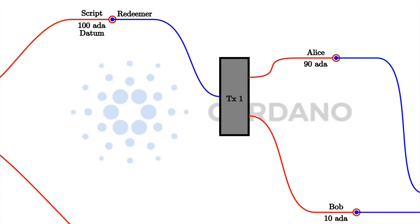Finally, we have the context. There are various choices for what this context could be — very restricted, just the redeemer, or very global, the whole state of the blockchain. In Cardano, it is the transaction being validated, including all its inputs and outputs. So a Plutus script gets three pieces of data: the datum sitting at the UTxO, the redeemer coming from the input under validation, and the context consisting of the transaction being validated and its inputs and outputs.